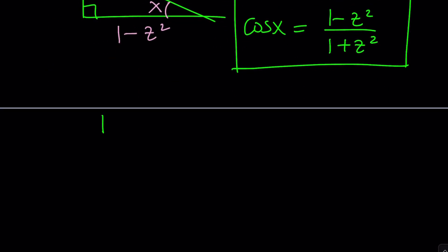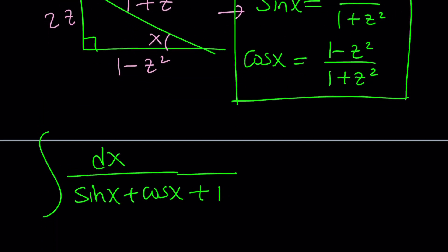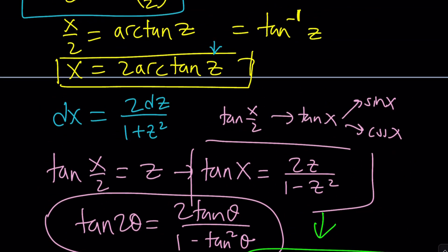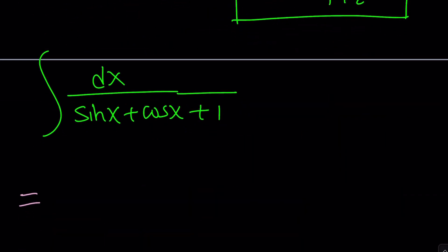Let's go ahead and see what else we might need, right? So, let's go ahead and write the original problem, dx over sine x plus cosine x plus 1, and we're going to integrate it. Now, we do know what to replace sine and cosine with, and obviously 1 is 1, and dx is already known. So, let's go ahead and plug it in. What is dx? dx is 2dz over 1 plus z squared. 2dz over 1 plus z squared.